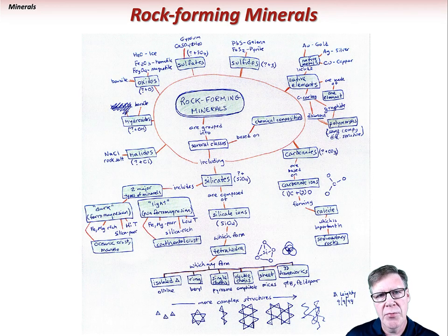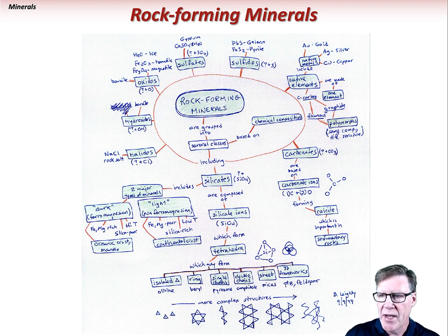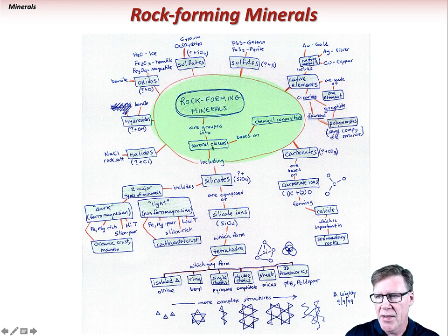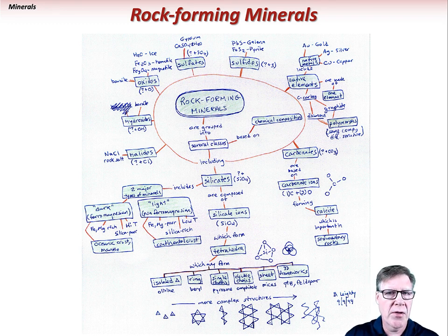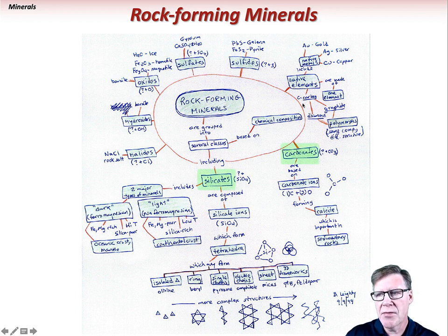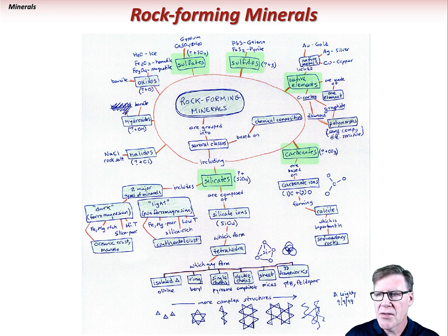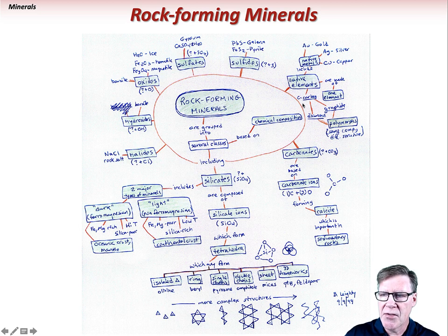Rock-forming minerals are grouped into several classes based on their chemical composition. The different mineral classes include the silicates, carbonates, native elements, sulfides, sulfates, oxides, hydroxides, and halides. The silicates are the most important rock-forming mineral group, and they are based on silicon and oxygen — specifically, one silicon covalently bonded to four oxygens — forming the silica tetrahedron. Other elements are added to make different kinds of silicate minerals.